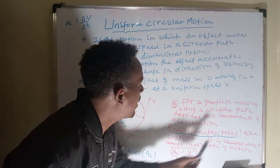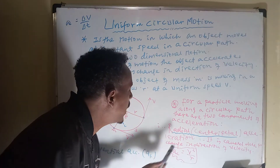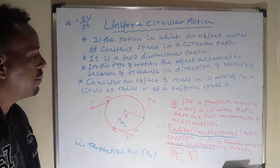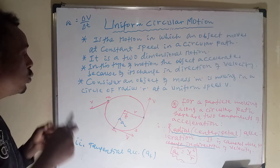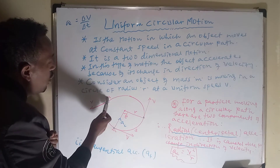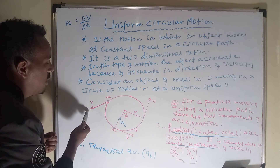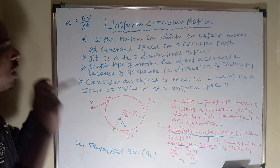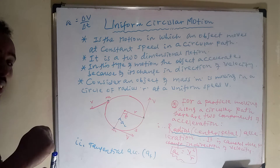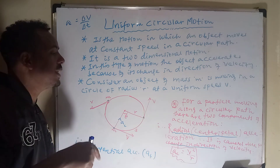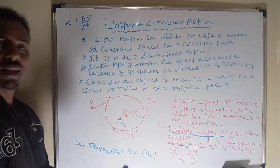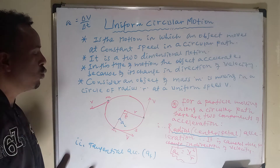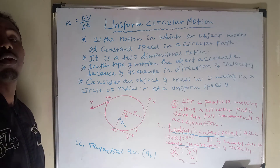Centripetal or radial acceleration is caused by the change in direction of velocity. When the object moves along the circular path, the direction of velocity changes from point to point, and the acceleration obtained due to this change in direction is centripetal acceleration. Tangential acceleration, on the other hand, is obtained due to a change in the magnitude of velocity.